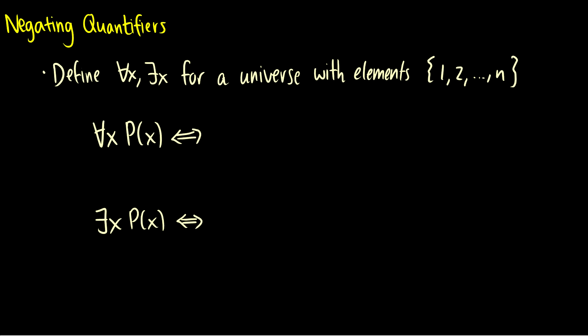But let's talk about negating quantifiers, since this is usually the tricky part. And I really want to define for all x P(x), and there exists an x P(x), in terms of propositional logic in a way. So we can kind of see how negation really looks like under the surface. So in the deep structure, what's happening. So I'm gonna have a universe with elements 1, 2, all the way up to n.